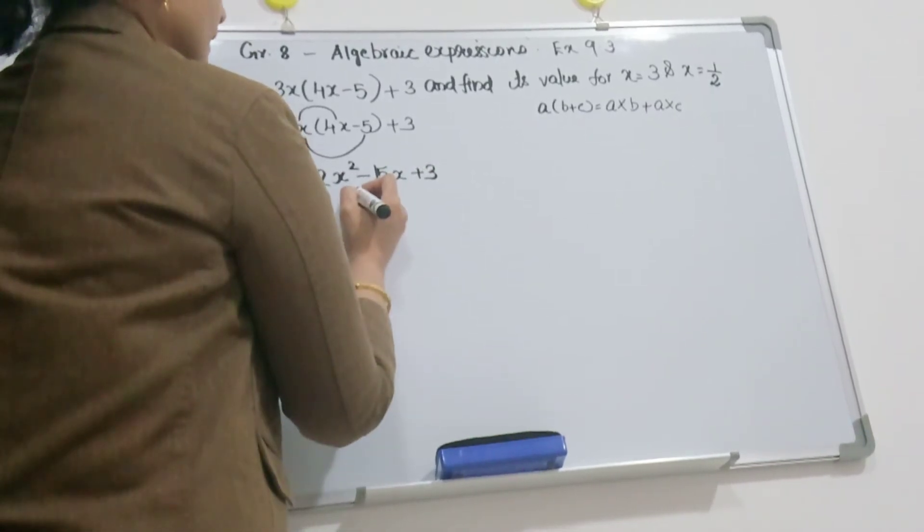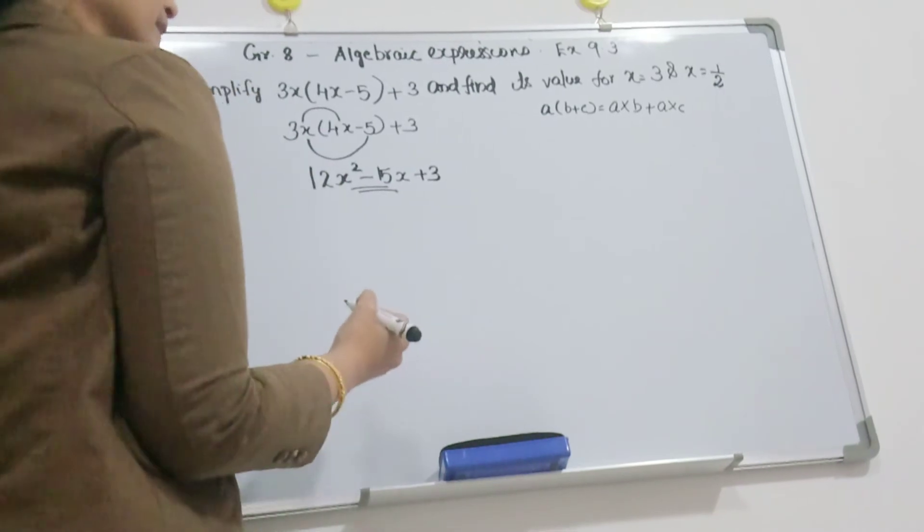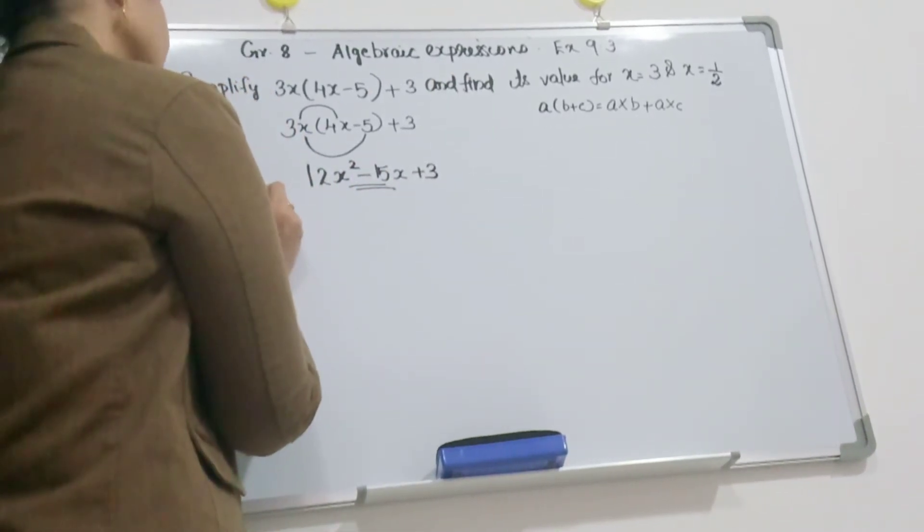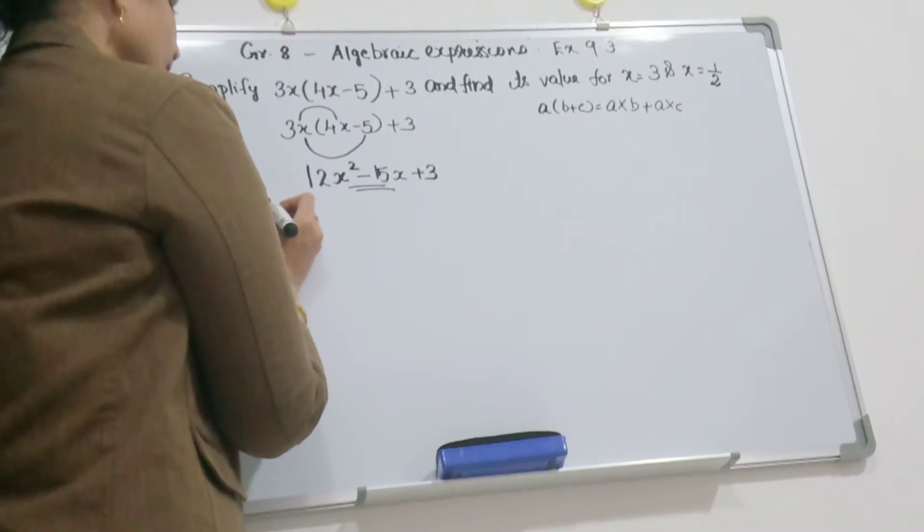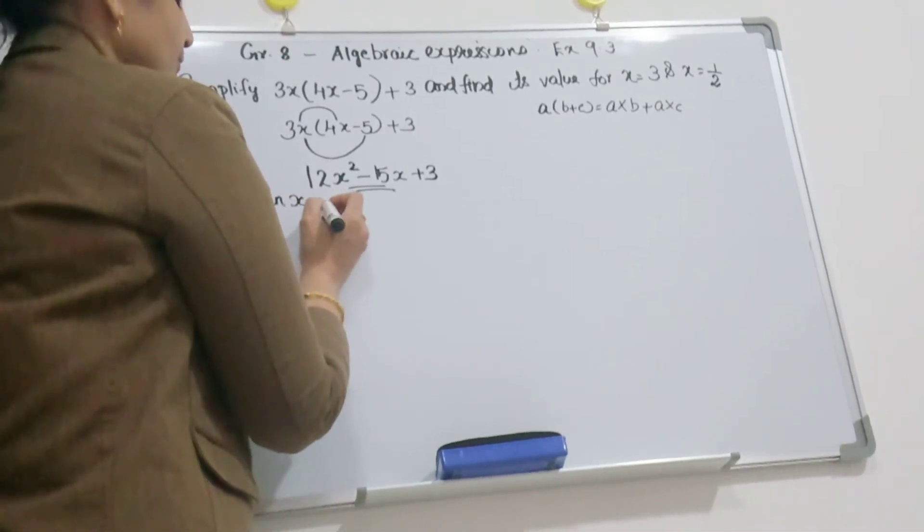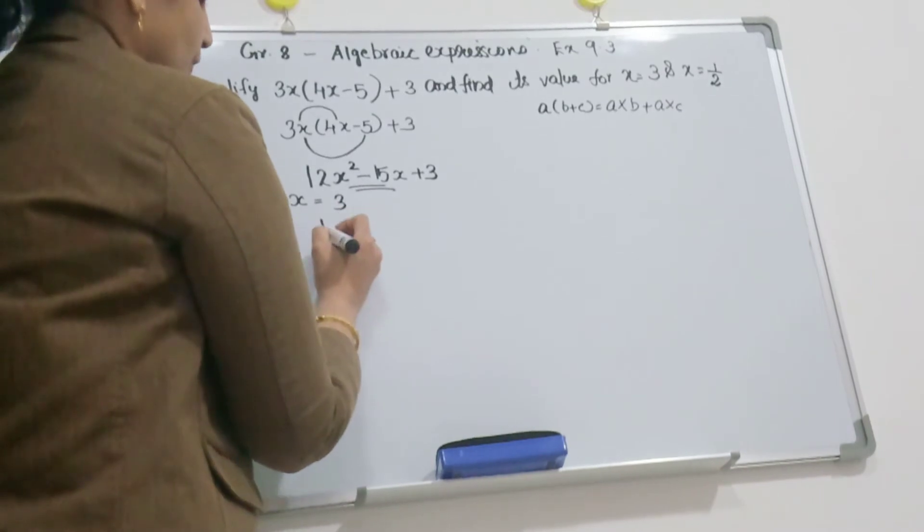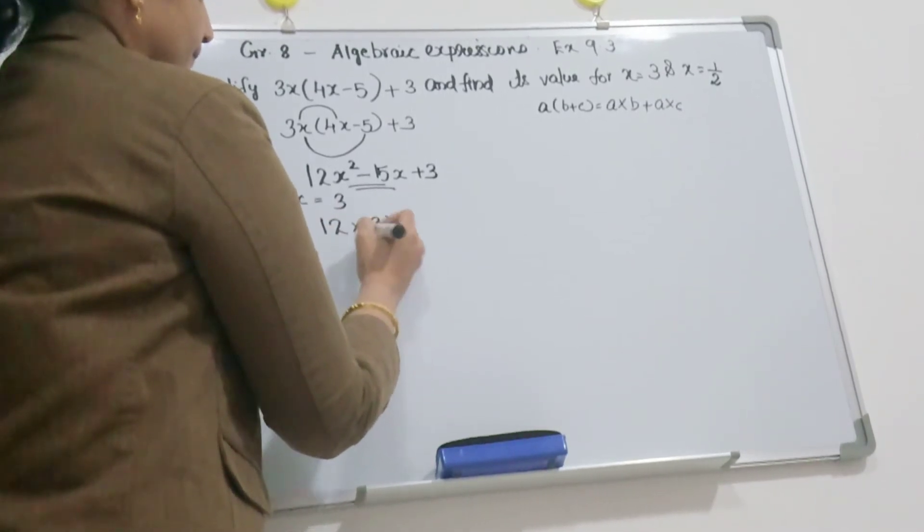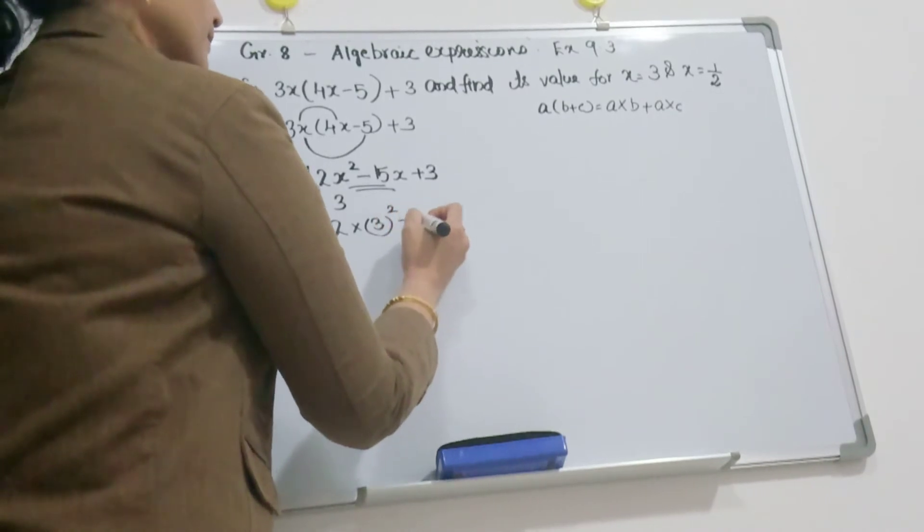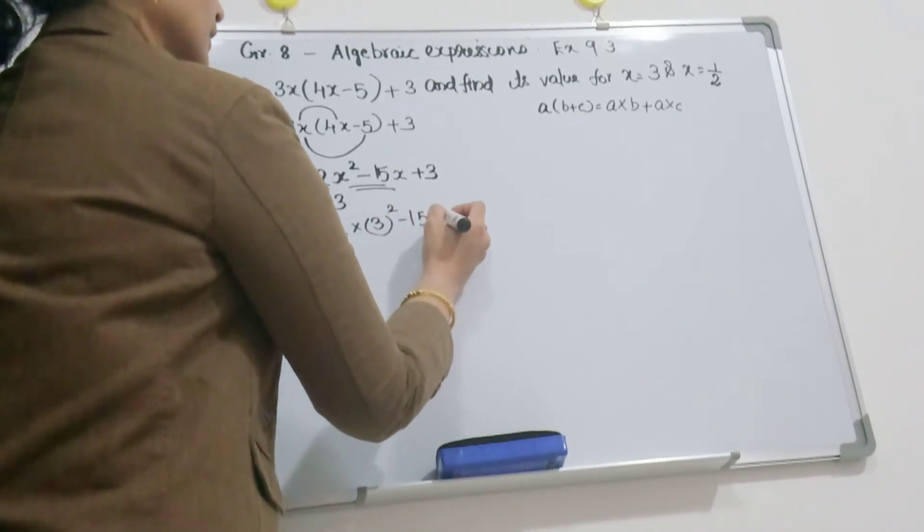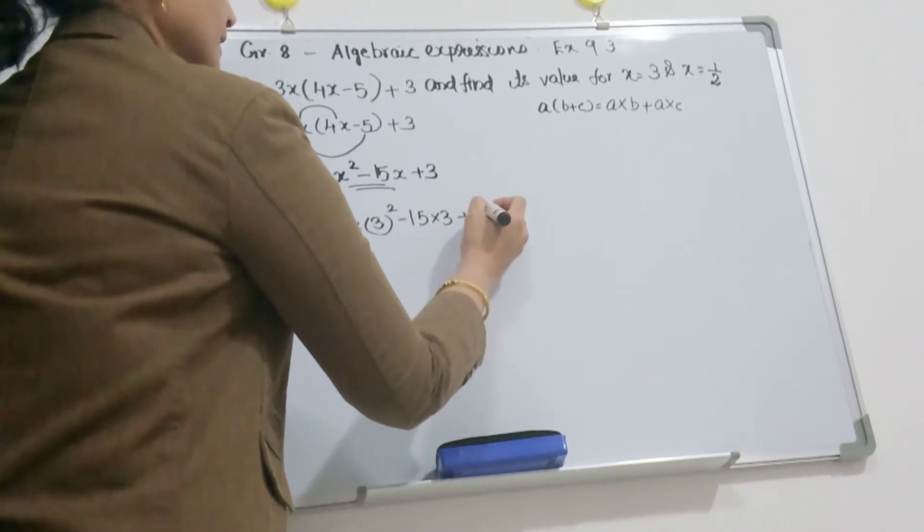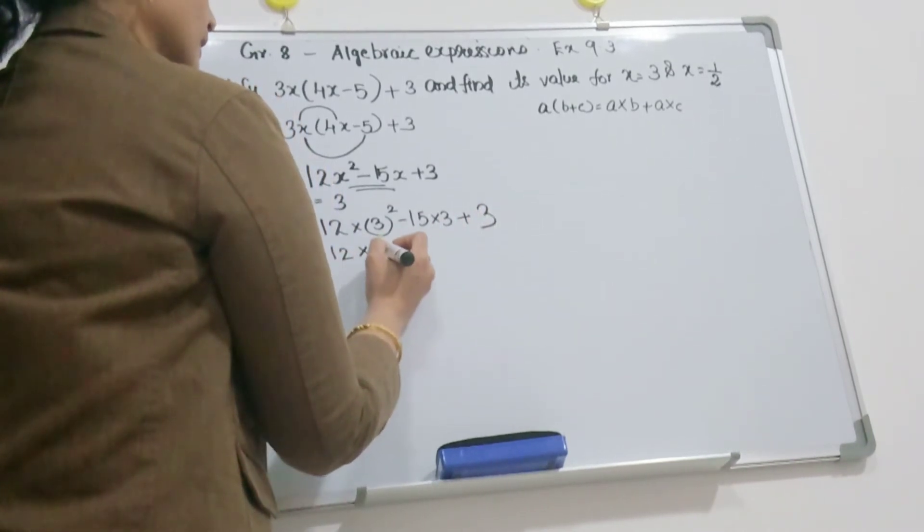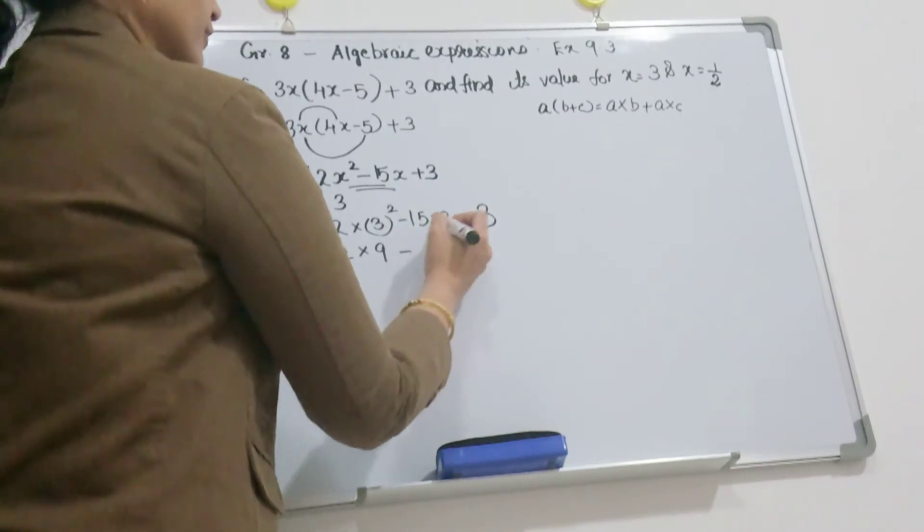Then you substitute the value. First case, when x is equal to 3. So 12 into 3 square minus 15 into 3 plus 3.